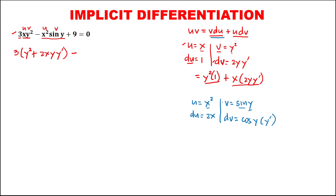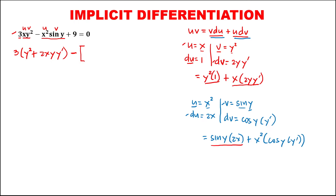Apply now this formula: v and du, so sine y times 2x, then plus u — x squared — times dv, which is cosine y times y prime. So this becomes 2x sine y plus x squared y prime cosine y. Then for the derivative of a constant, this is 0, then equals 0.